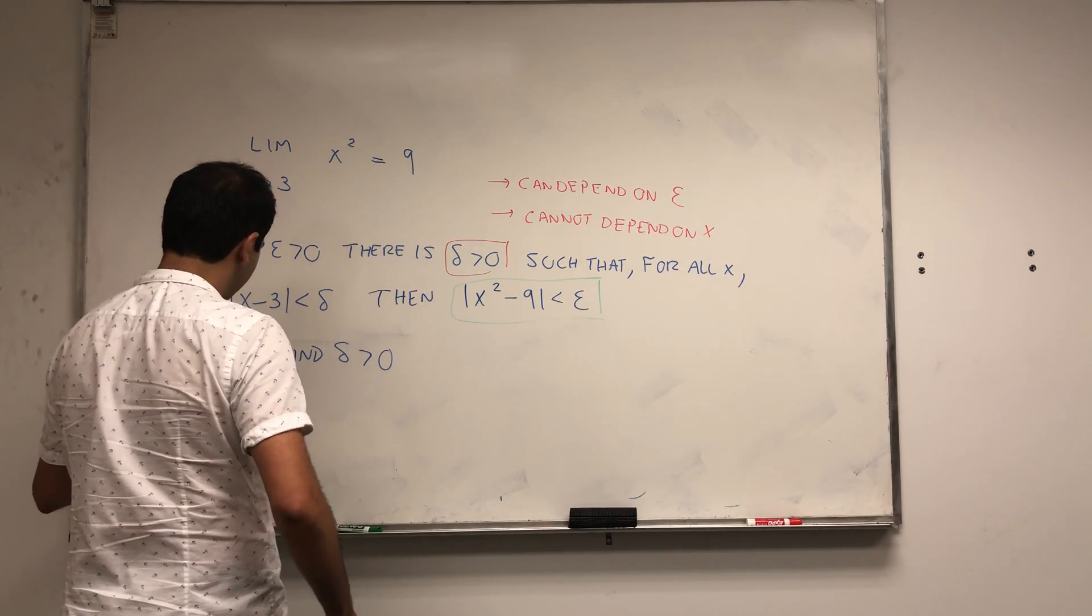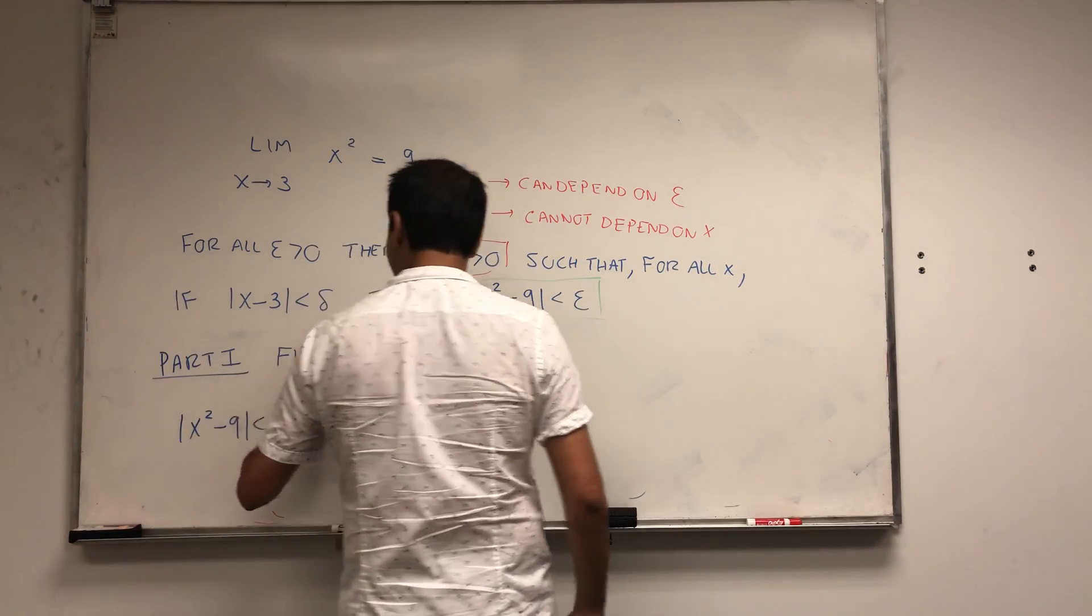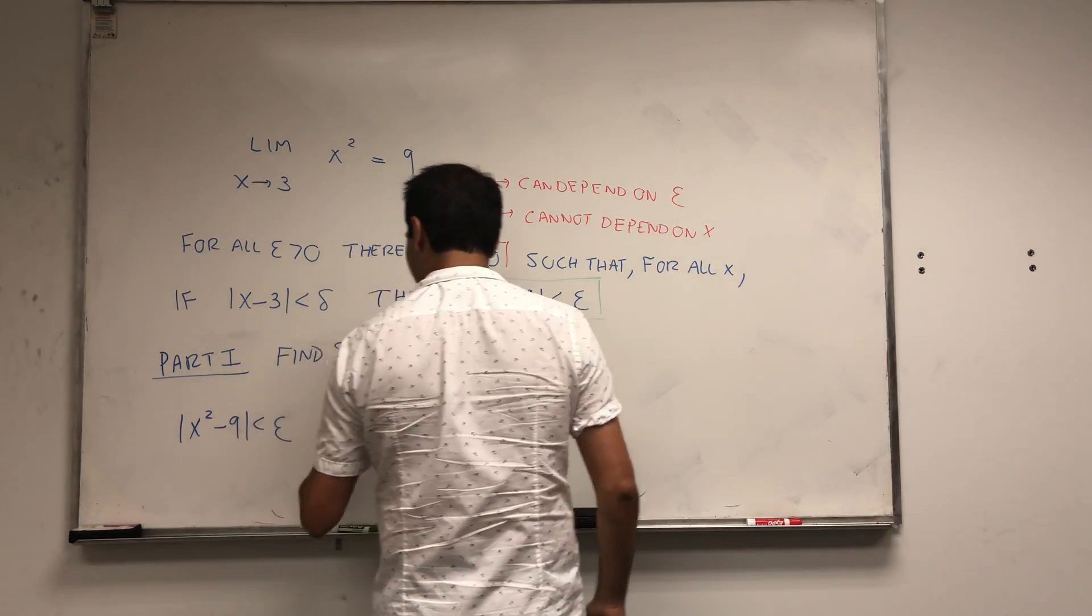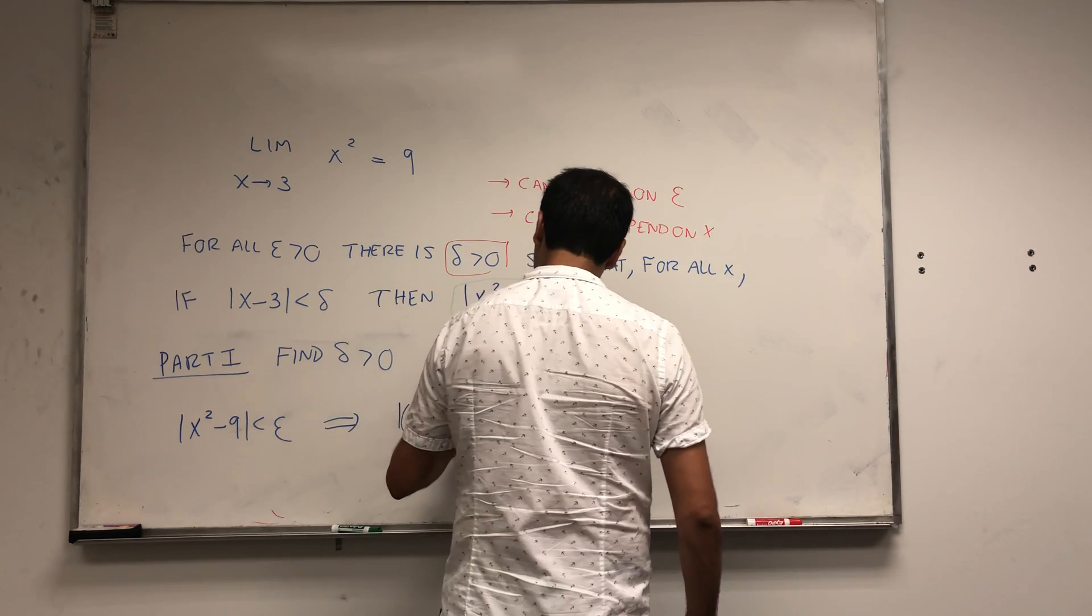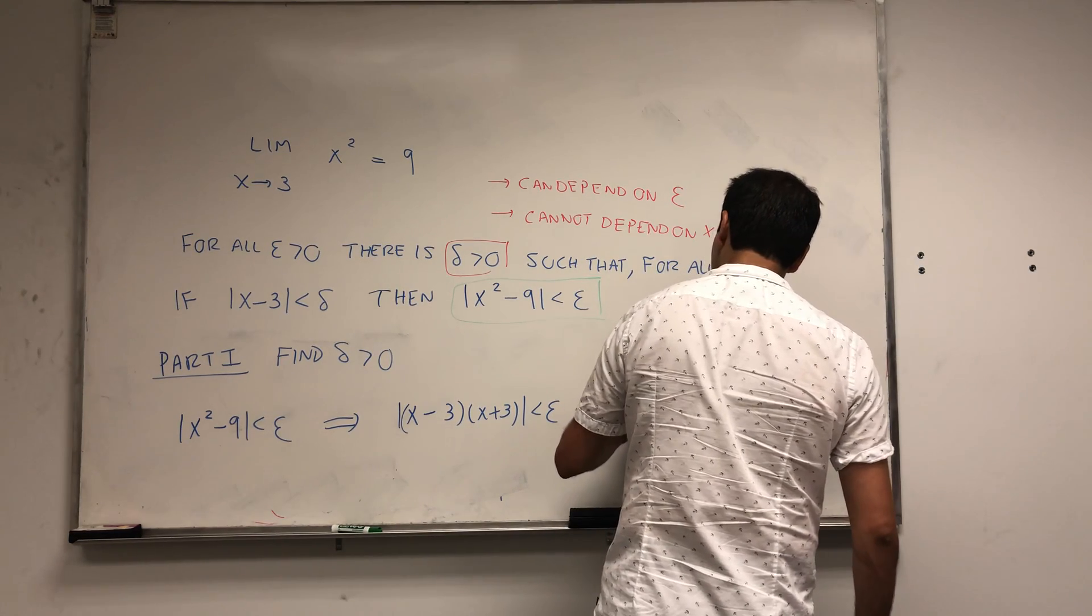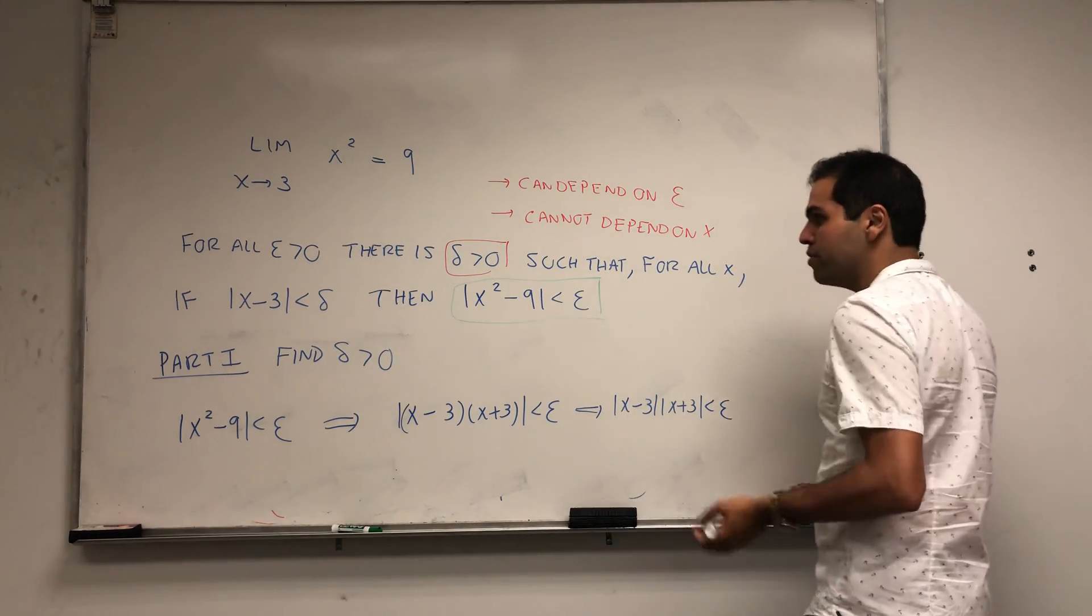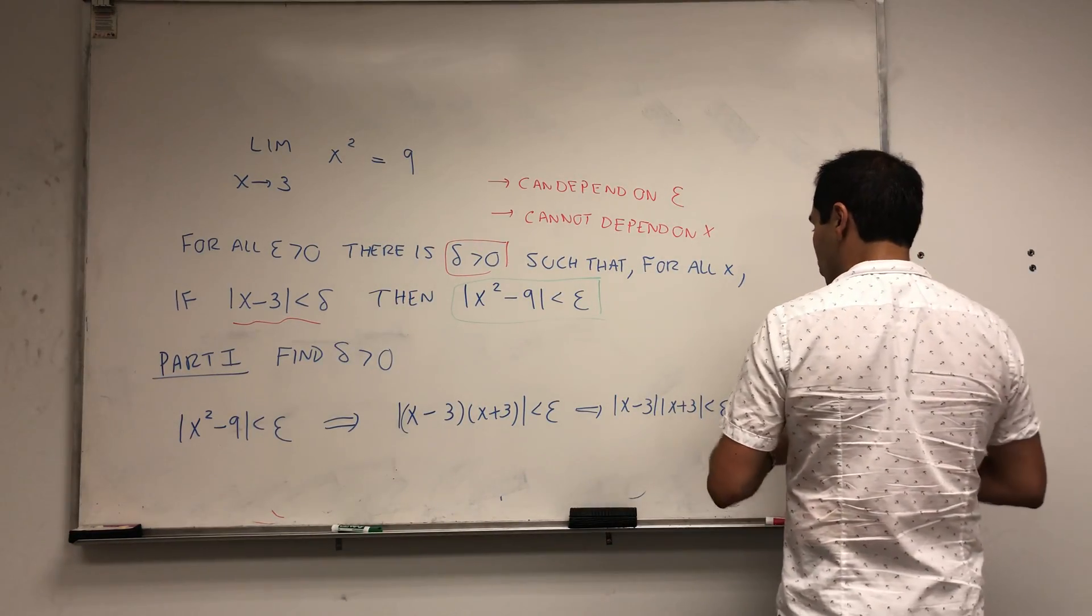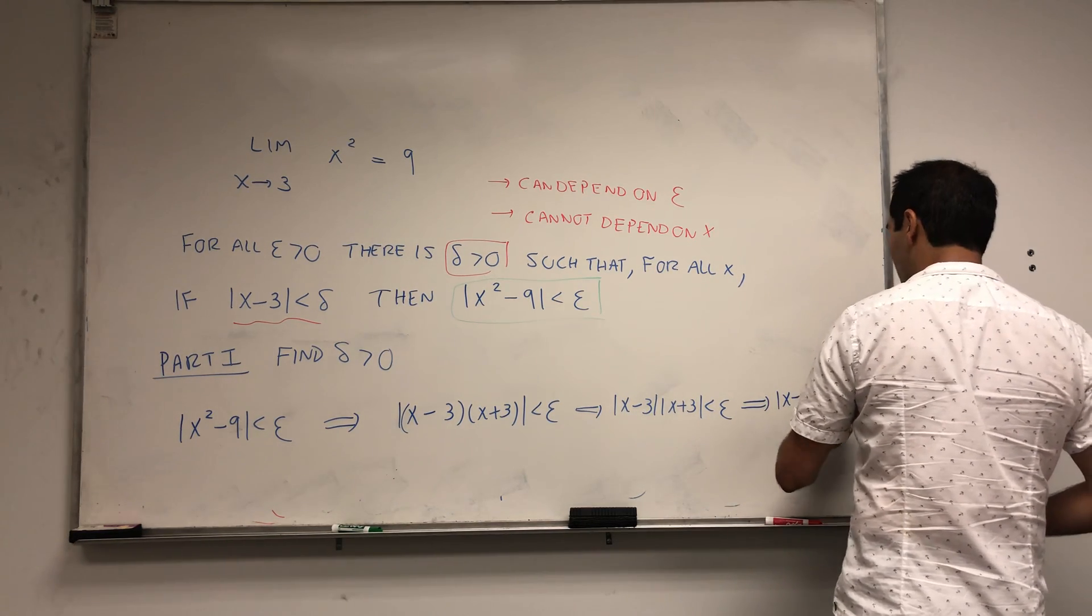We want to solve for stuff. Notice in particular this thing can be factorized very easily, because x squared minus 9 is the same thing as x minus 3 times x plus 3. That's less than epsilon. Let's solve for x minus 3.